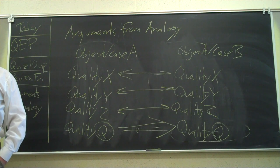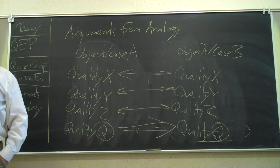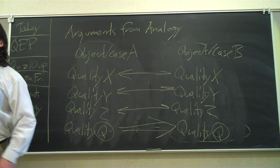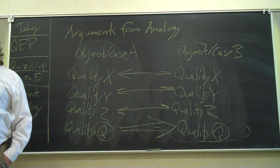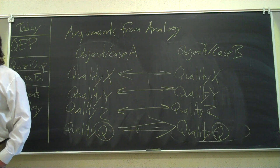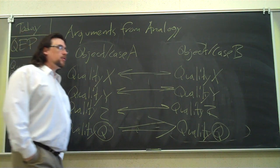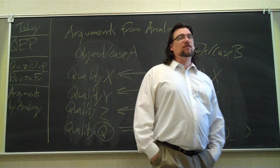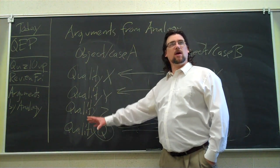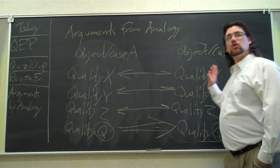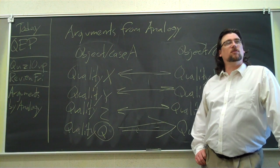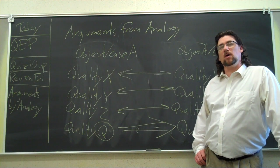Now, what tells us how strong or how weak these are? Well, think about this issue of how many qualities. If they share more qualities in common, should it be stronger or weaker? Should it be stronger, right? So, if you're trying to make a case of why somebody who likes this thing or doesn't like this thing should like or dislike this thing, you want to try to come up with as many reasons as possible.